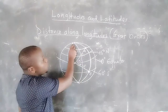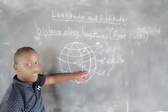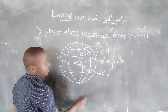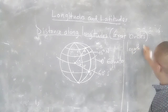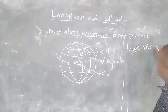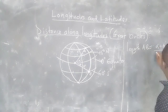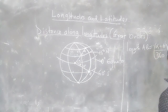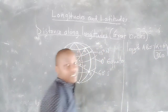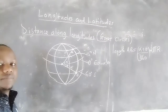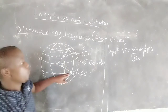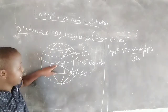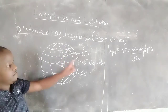We can get this arc length just the way we get the length of other arcs. Considering the whole longitude, the fraction of the arc is given by the angle. So the arc length M equals the angle theta divided by 360, multiplied by 2πR. This gives the distance between the two places along the great circle.